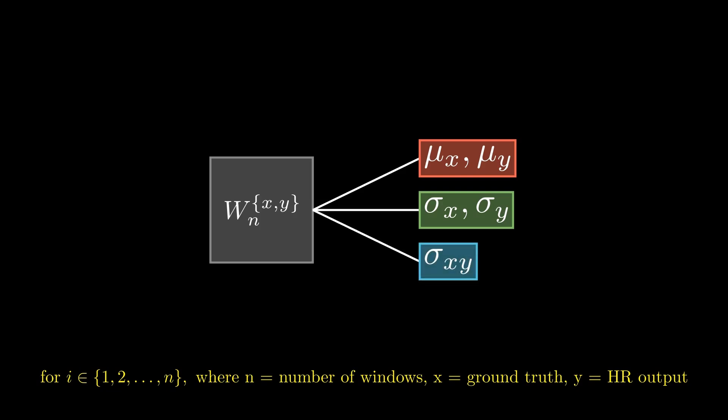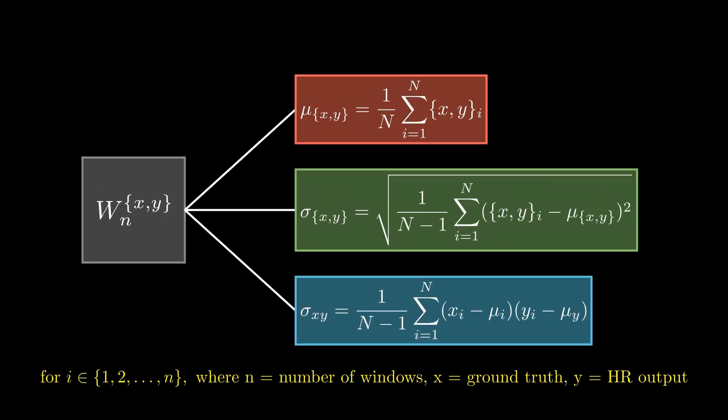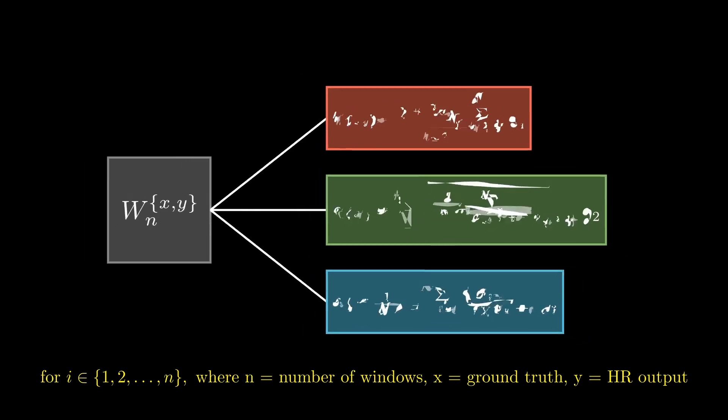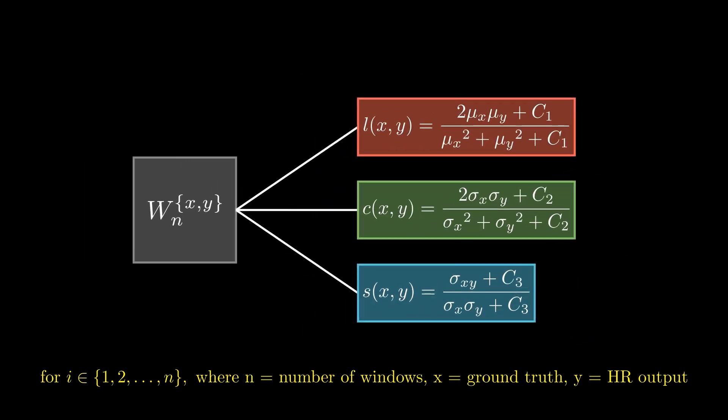And finally, structure. Structure, in my opinion, is less clearly defined, but it is dependent on the covariance between the two windows. In the SSIM algorithm, each of the three statistical components has their own comparison functions, which are defined as follows. The overall SSIM value for a given window is the result of combining the above three functions in the following manner.